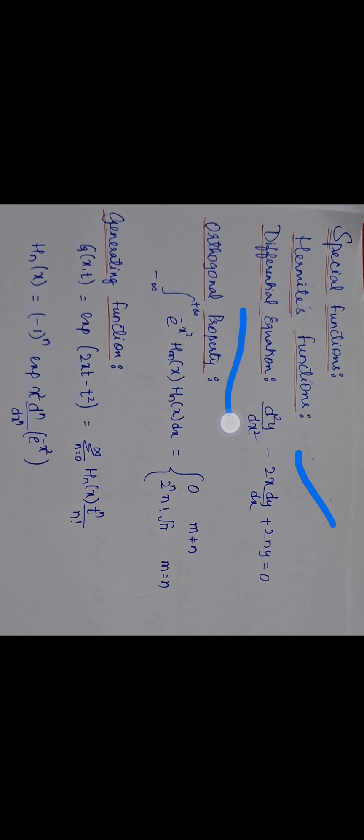This video covers Hermite functions. The Hermite differential equation number 2 is: d²y/dx² minus 2x dy/dx plus 2ny equals 0. This is the differential equation of Hermite's function.